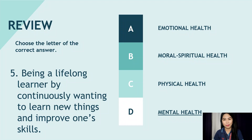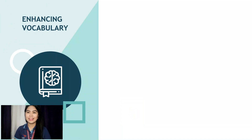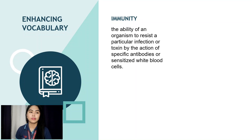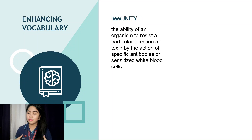I think you're ready to learn more. Let's enhance your vocabulary. The first word is Immunity. It's the ability of an organism to resist a particular infection or toxin by the action of specific antibodies or sensitized white blood cells. It is a state of being immune — a condition of being able to resist particular diseases. It's our body's way to protect ourselves from diseases.